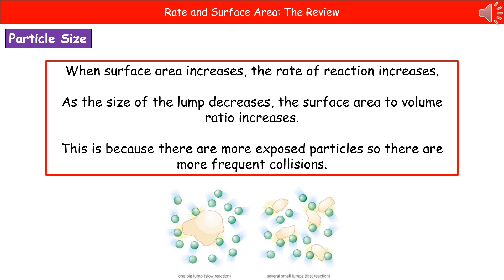And I've given you a diagram at the bottom there just to show you this. On the left we've got one big lump and obviously our green particles can only collide with the very outside surface. Whereas on the right we've broken it up into smaller pieces and therefore there's more available particles on the surface for the green particles to collide with. So we have more frequent collisions and therefore an increased rate of reaction.